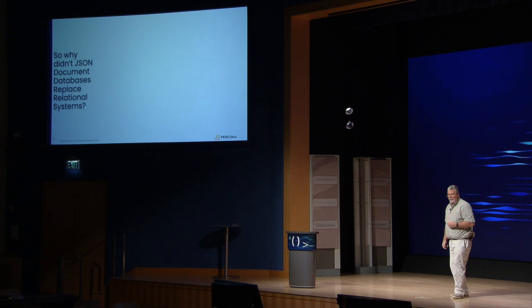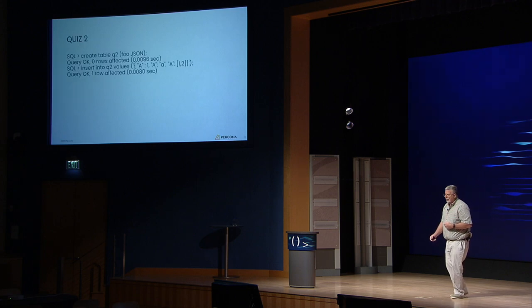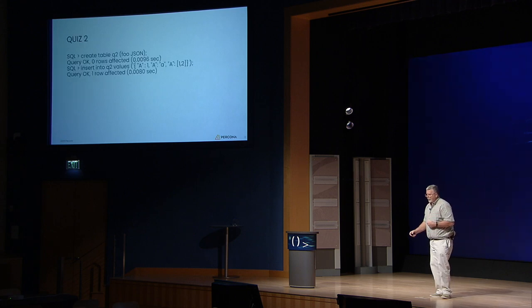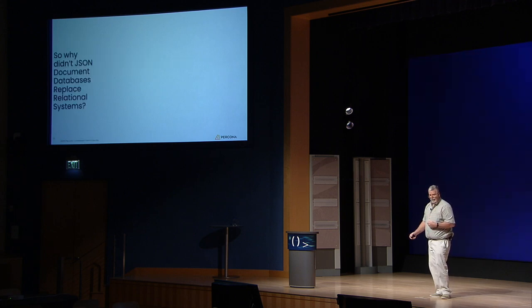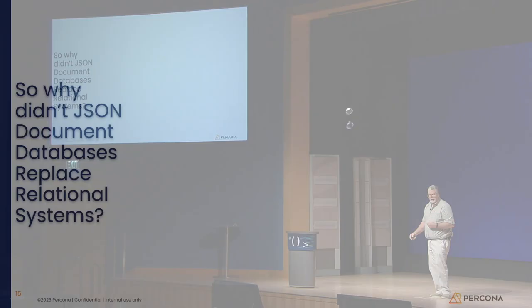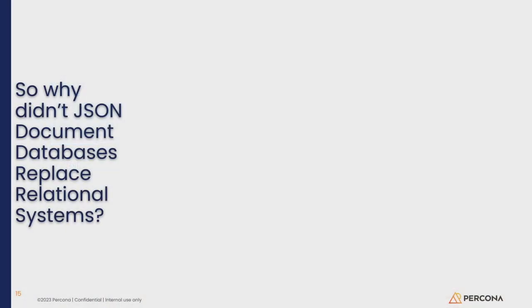So why didn't JSON document databases replace relational systems? Basically what happened is people realized the relational model has a lot to give. Sure, it's been around for 50 years, but it really is useful in most business settings. Also, a lot of the drawbacks of the document database is that you couldn't have rigor on your data.